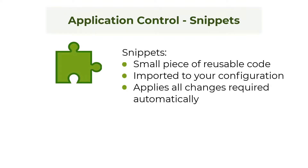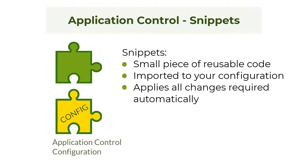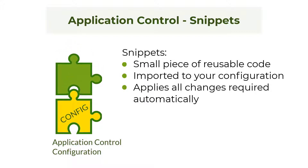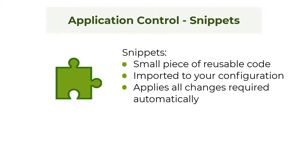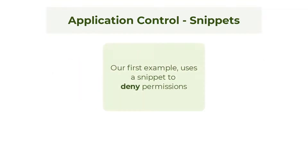A snippet is a small piece of reusable code. In the context of application control, snippets are imported into your configuration, where they add required files and setting changes. What files are added and what settings are changed is different for each snippet. To illustrate snippets and their usefulness, we'll look at two examples.